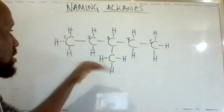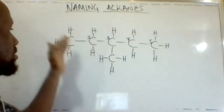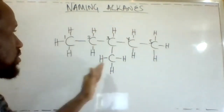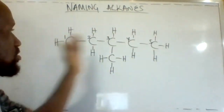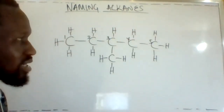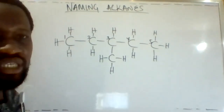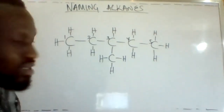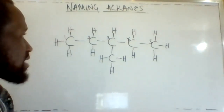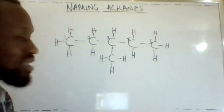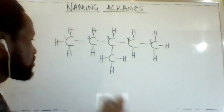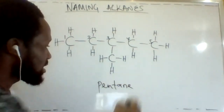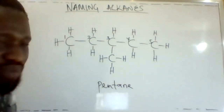If we number the other way around it's one, two, three, four — still the same. That is the longest continuous carbon chain available in this substance. Therefore, this is the fifth alkane, known as pentane. We are going to write that down as pentane.